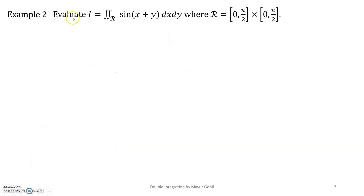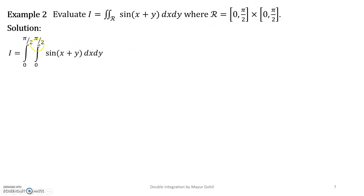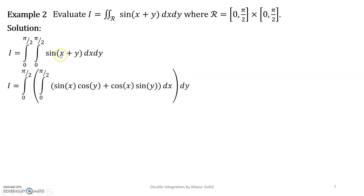Let us see the next example. Evaluate i equals the double integration over region R of the function sin(x + y) dx dy, where R is the rectangle given by [0, π/2] × [0, π/2]. So the limits of x and y are both 0 to π/2. Put a bracket to the inner integral. Since it is sin(x + y), expand it using the formula sin(a + b) = sin a cos b + cos a sin b.